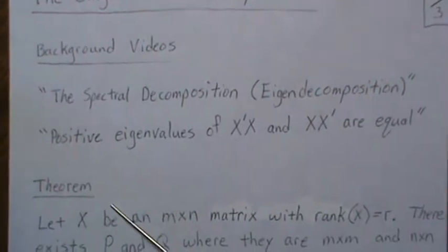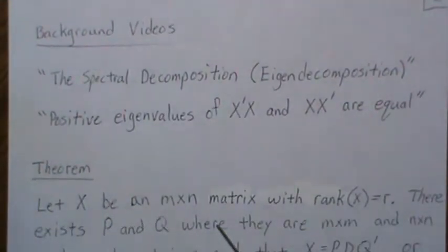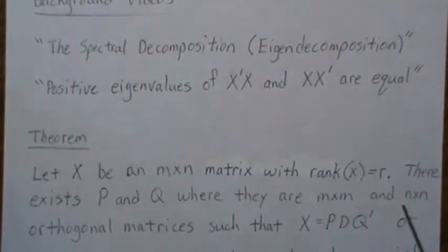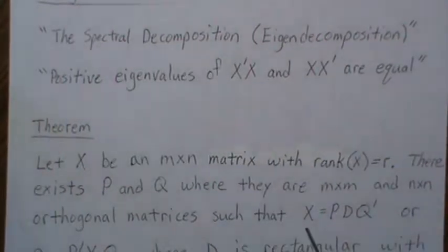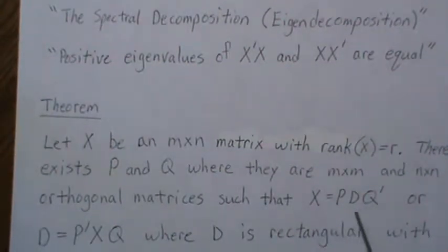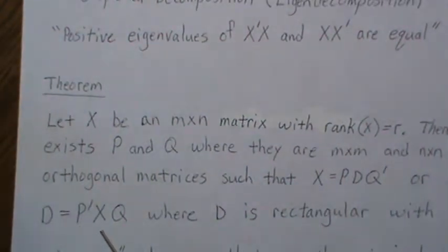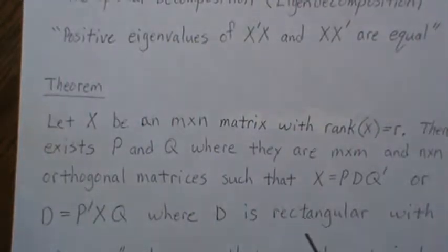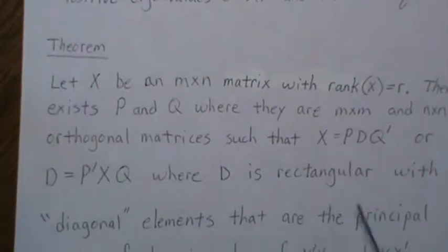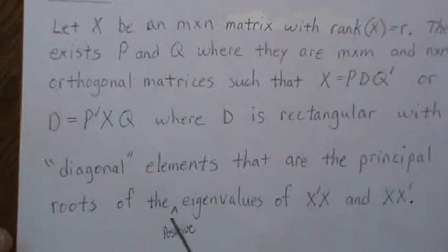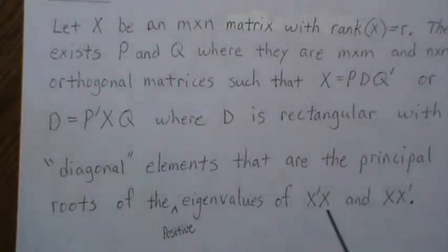The singular value decomposition theorem is this. Let x be an m by n matrix with rank r. There exist P and Q, where they are m by m and n by n orthogonal matrices, such that x equals P D Q-prime. Since those are orthogonal, we can multiply them to the other side and represent this as D equals Q-prime P-prime x Q. D is rectangular with diagonal elements that are the principal roots of the positive eigenvalues of x-prime-x and xx-prime. The positive values are the same for both of those.